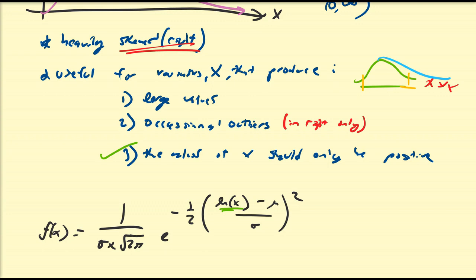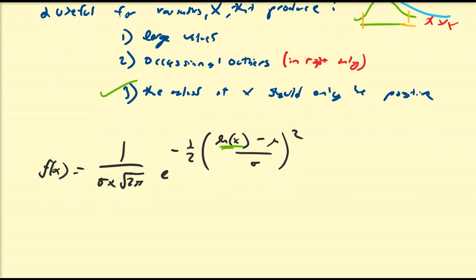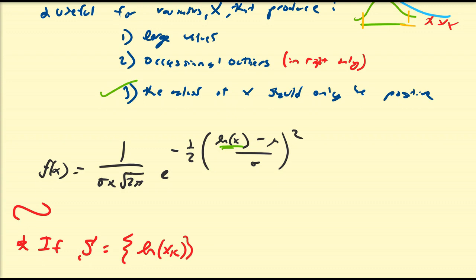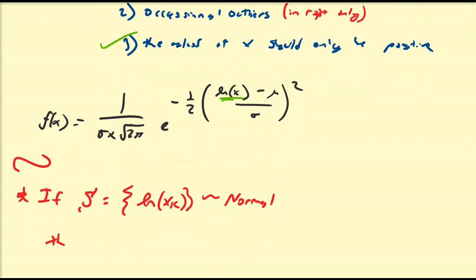If the values of x occasionally have outliers and they're usually large values, then a log normal distribution most likely is going to be appropriate. To summarize in a very concise representation: if a data set of values of the form natural log of x_k — natural log of x_1, natural log of x_2 — is approximately equal to a normal distribution, then x_k follows a log normal distribution.